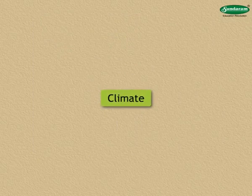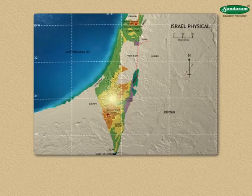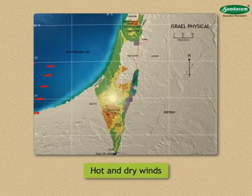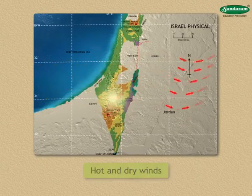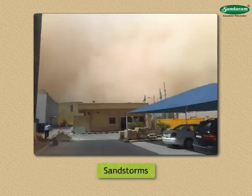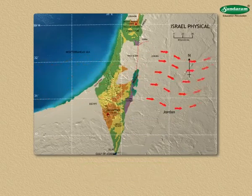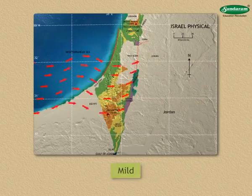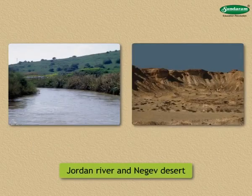As Israel is in the desert region, the temperature is high in summer and the climate is dry. Hot and dry winds blow in summer; they are called Khamsin winds here. These winds cause sandstorms. Winds blowing from the Mediterranean Sea make the climate of the western coastline mild.